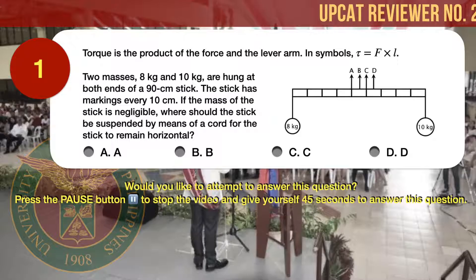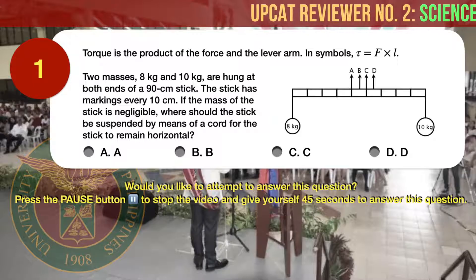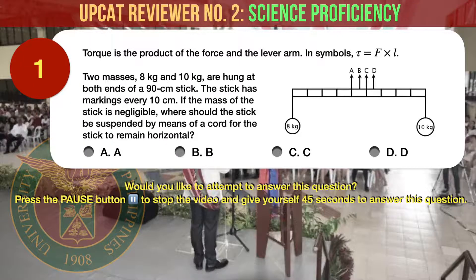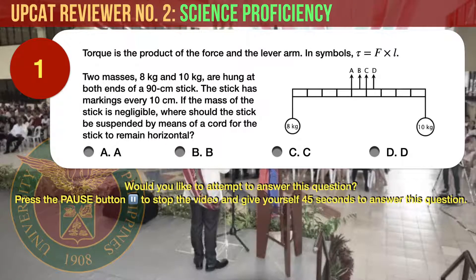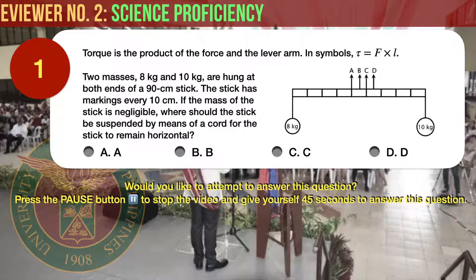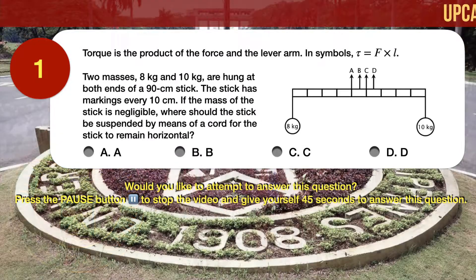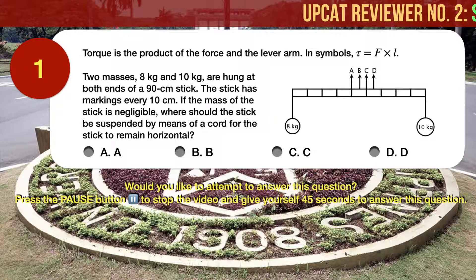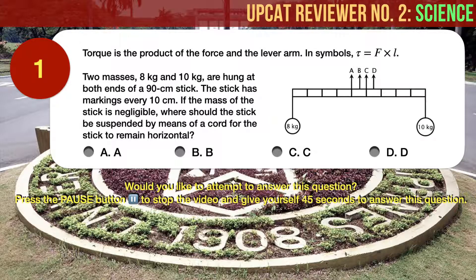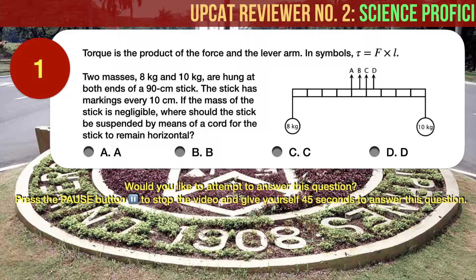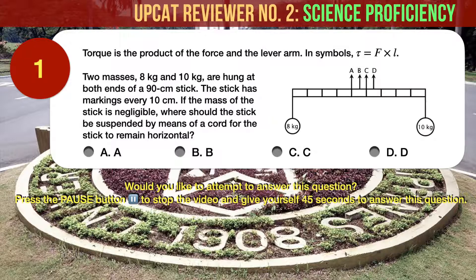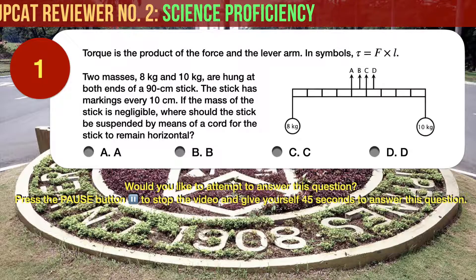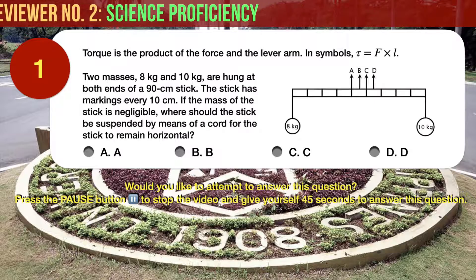Question Number 1. Torque is the product of the force and the lever arm. In symbols, torque, represented by the Greek letter tau, is equal to force F times the length of the lever arm, L. Referring to the accompanying diagram, two masses, 8 kg and 10 kg, are hung at both ends of a 90-centimeter stick. The stick has markings every 10 cm. If the mass of the stick is negligible, where should the stick be suspended by means of a cord for the stick to remain horizontal?